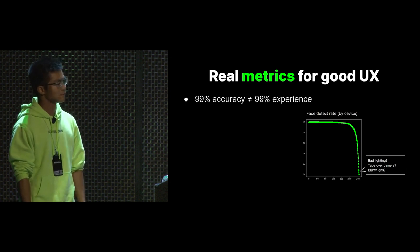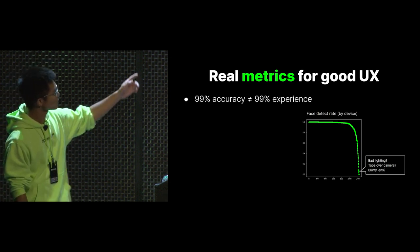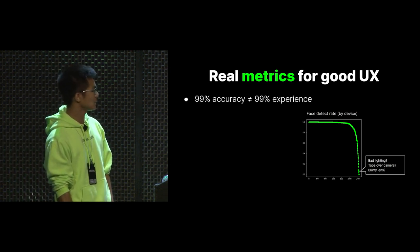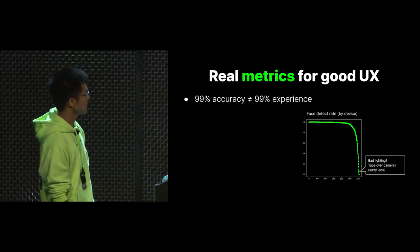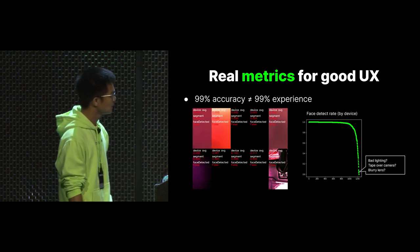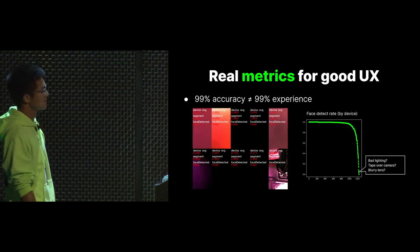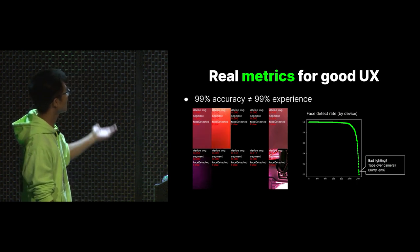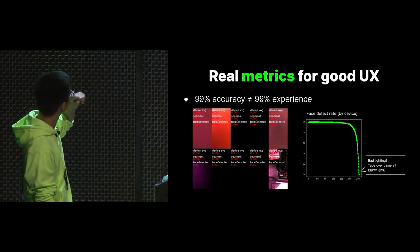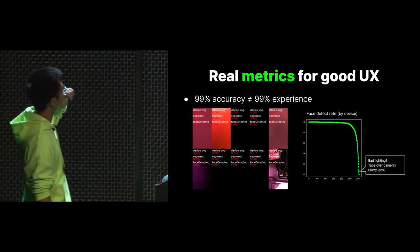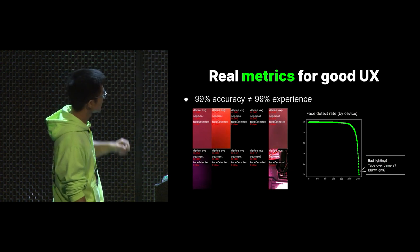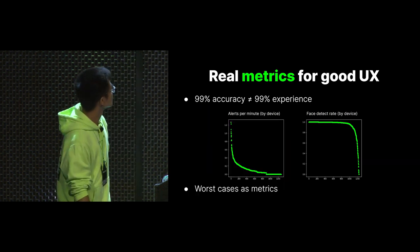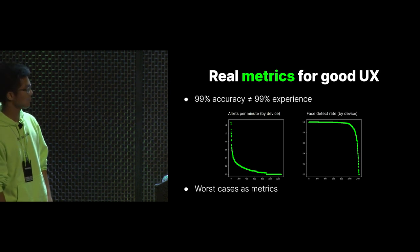On the right is another example of testing by worst cases. According to this distribution curve, some devices are constantly failing to detect faces. Why? Is it due to the model not working in certain lighting conditions, or maybe the lens is covered? We need to figure them out. By visualizing all these worst cases, we can easily identify what some of the problems are and what can be fixed either by software or hardware. For example, in the red ones they're clearly covered and they're hopeless, and in the black images it's probably because the IR LEDs are broken, which is a hardware issue. The takeaway is we can learn and improve things a lot by just looking at the worst cases.